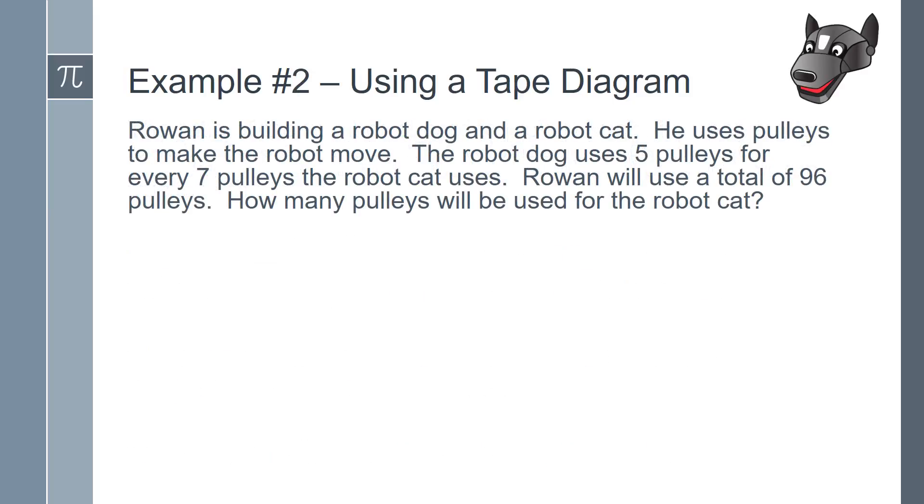Example number 2. Rowan is building a robot dog and a robot cat. He uses pulleys to make the robot move. The robot dog uses 5 pulleys for every 7 pulleys the robot cat uses. Rowan will use a total of 96 pulleys. How many pulleys will be used for the robot cat?